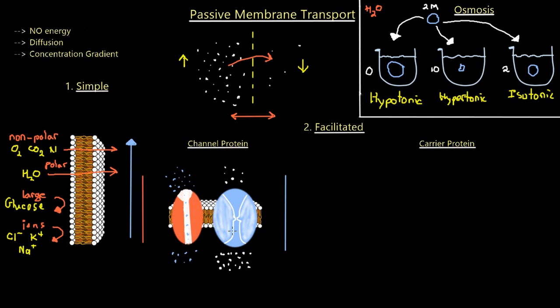Another type of channel protein is the calcium voltage-gated channel — just one example, as there are many voltage-gated channels in cells. Calcium flows from an area of higher concentration to lower concentration, facilitated by these channel proteins. However, voltage-gated channels require some sort of voltage change across the membrane to open. Without an electrical stimulus, these channels will not open and will not simply allow ions to exit the cell unless needed.